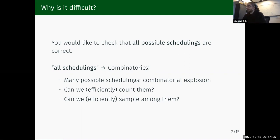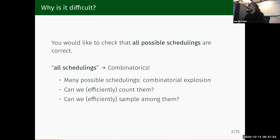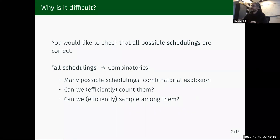So what can we do to help? We can look at two different problems. First, we can try to quantify this explosion — that's a counting problem. We take a program and we'd like to count the number of possible schedulings. Also, we can sample executions among all possible executions. That's helpful because some people sample possible schedulings to check that programs are correct. We can help by providing efficient and uniform samplers, which is important because uniformity means good coverage.